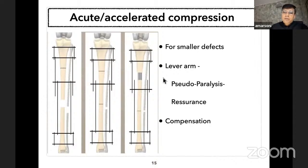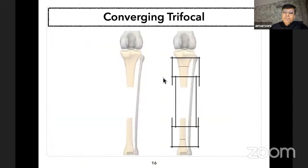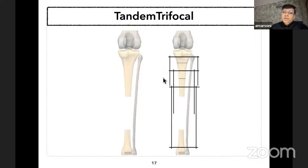In such instances, because the lever of muscle is reduced, there will be a pseudo-paresthesia-like effect; one has to reassure the patient and provide compensation for limb length discrepancy. Whenever we do trifocal osteosynthesis, there are two corticotomies and the transported fragments converge towards each other to dock. In contrast, in tandem trifocal—when the gap is eccentric—a dual corticotomy is done at one end and the transported fragment runs in tandem to dock at the other end.